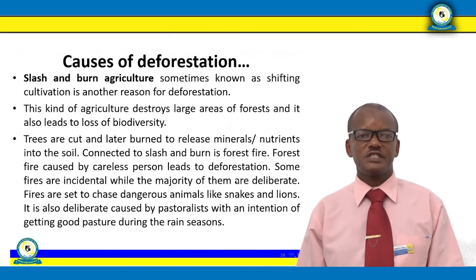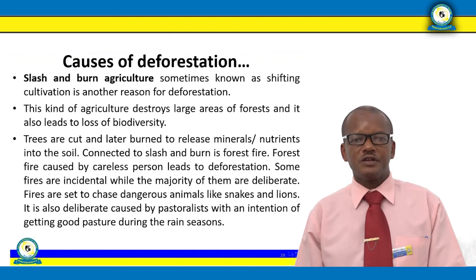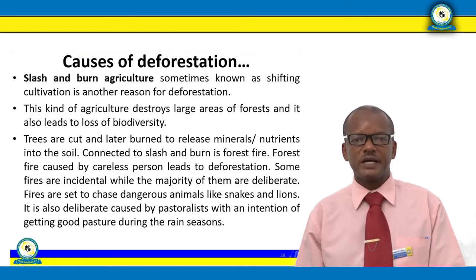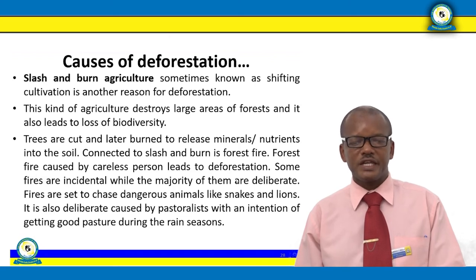Another cause is slash and burn agriculture, sometimes known as shifting cultivation. This system involves clearing the forest, cultivating the area for a short period of time, then moving to another piece of land. This causes large-scale deforestation and leads to loss of biodiversity as some species disappear. Trees are cut and later burned to release minerals into the soil; the area is initially very fertile but in time the fertility decreases, forcing people to move to new land.